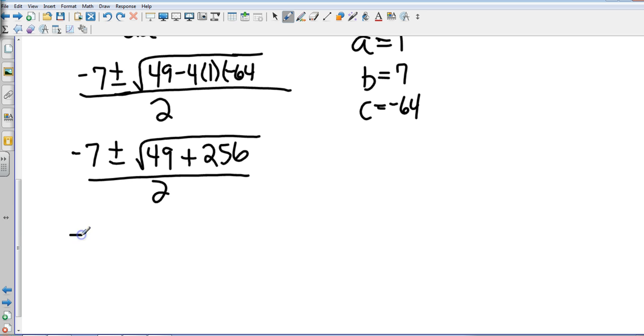Alright, so negative 7 plus or minus, okay, comes out to be 305 all over 2. So we need to find the square root of 305.